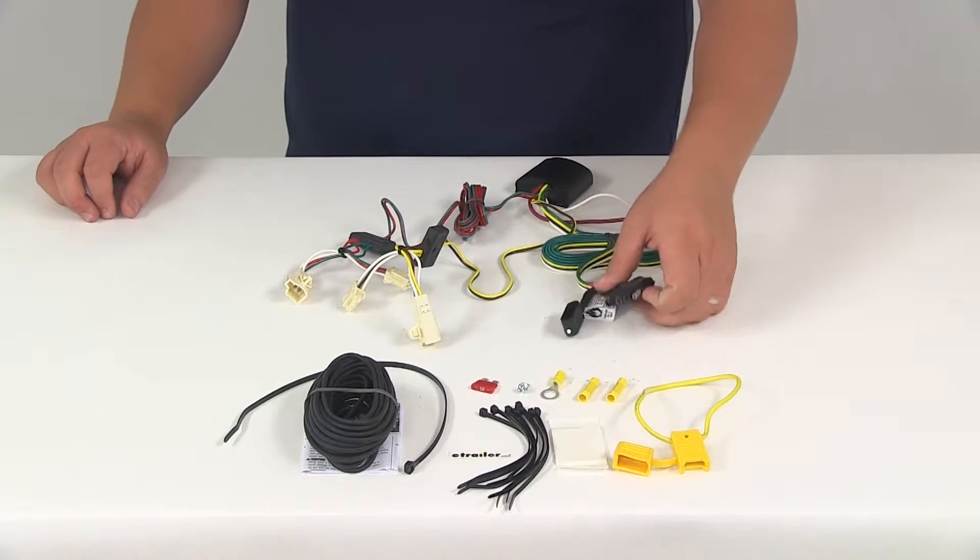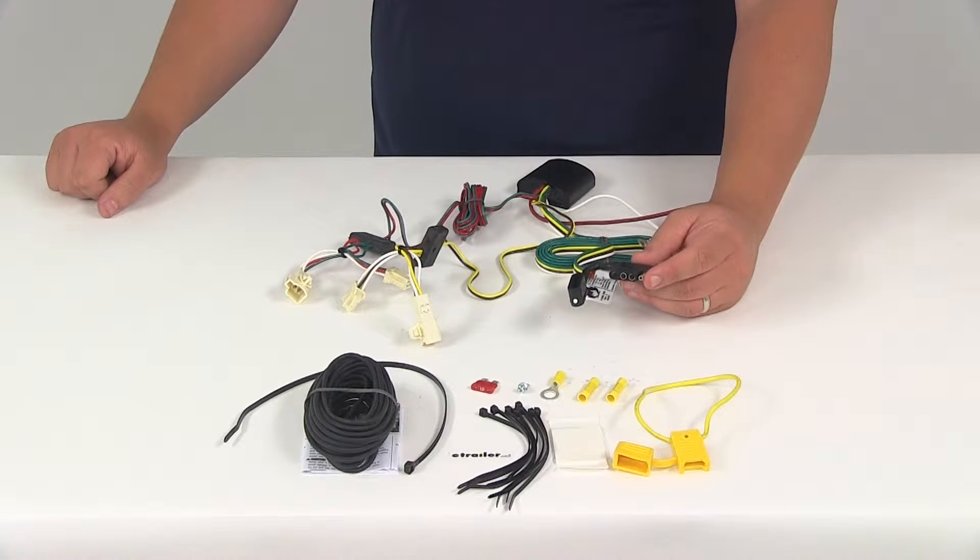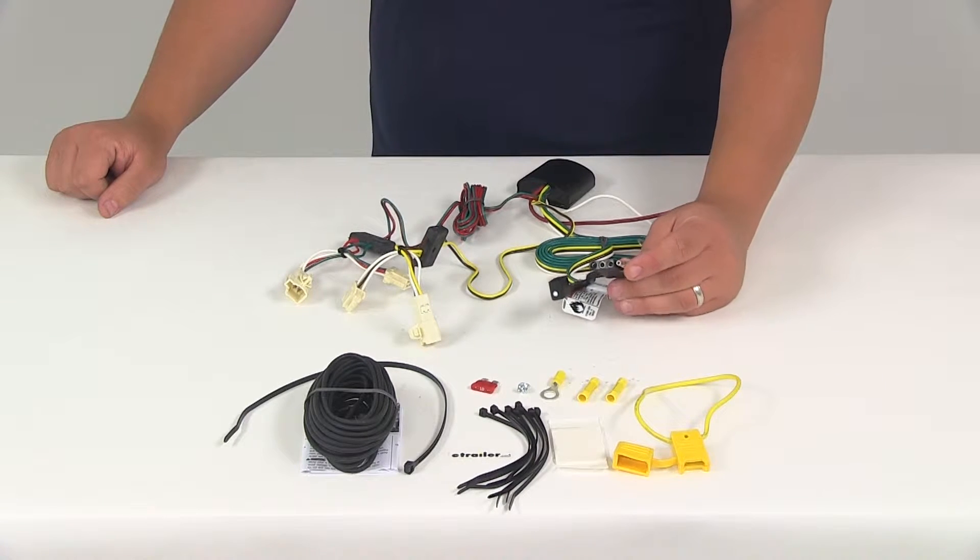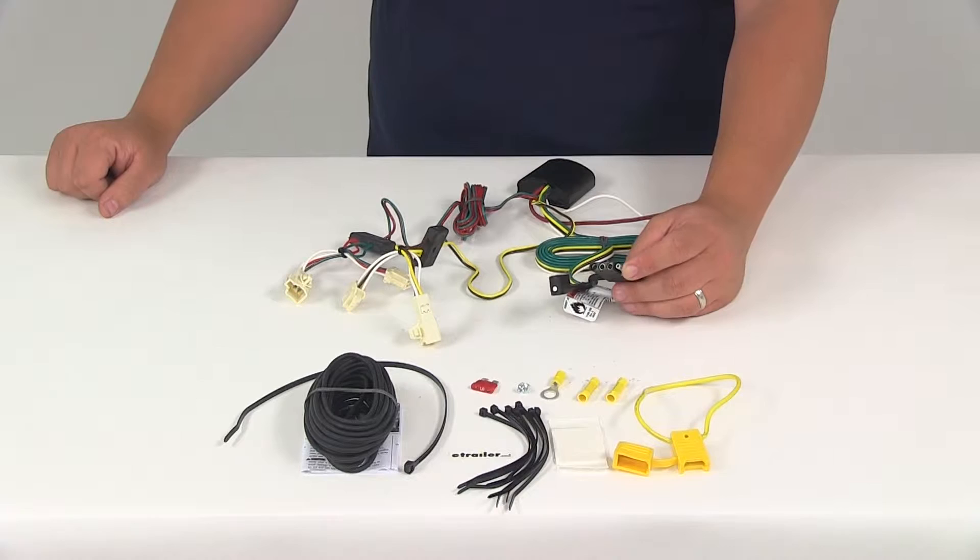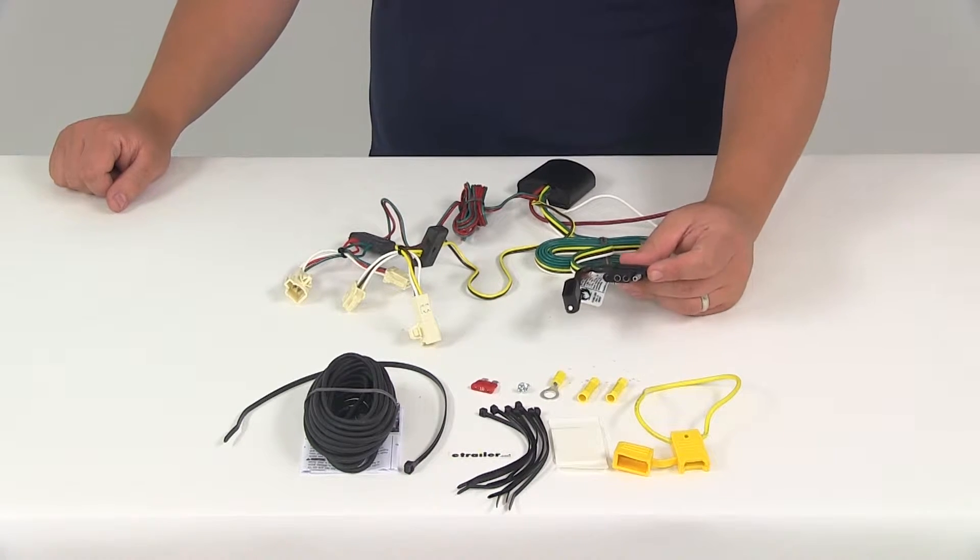It's going to provide your four-way flat trailer connector at the back of your vehicle. That's going to help power your trailer signal lights. It is compatible with five-pole, six-pole, and seven-pole adapters. Those adapters are sold separately.